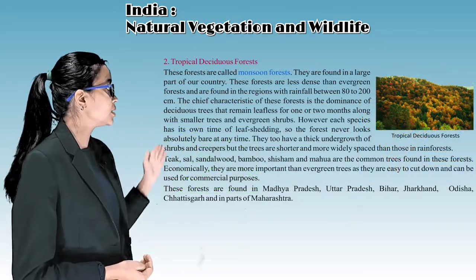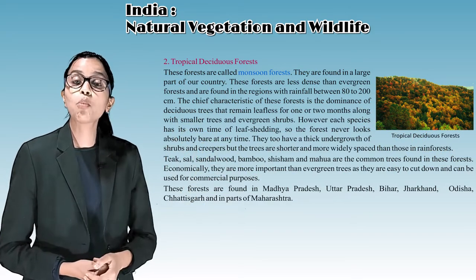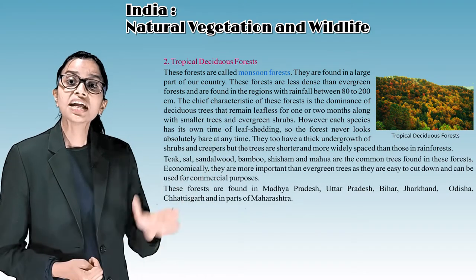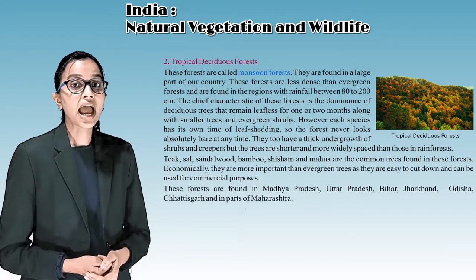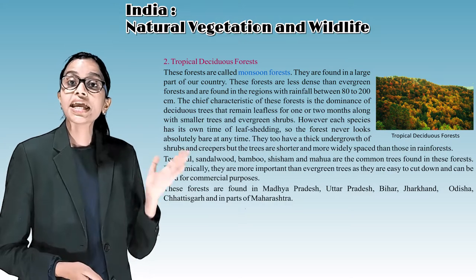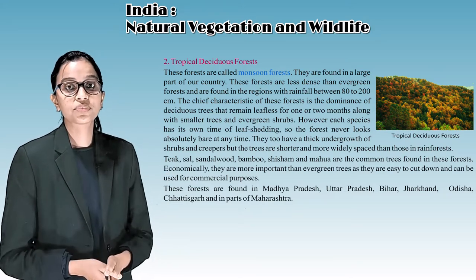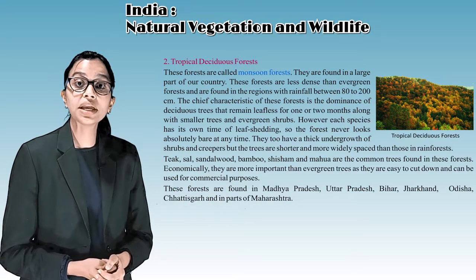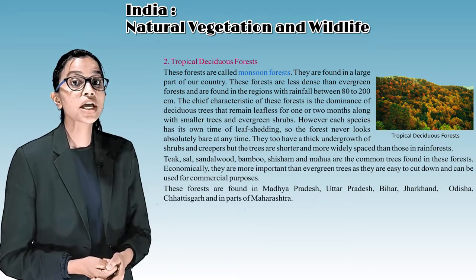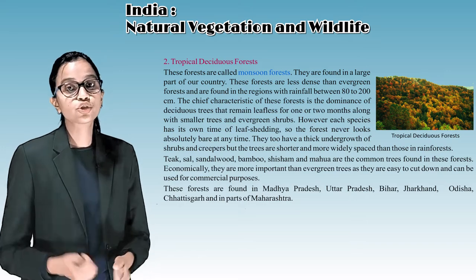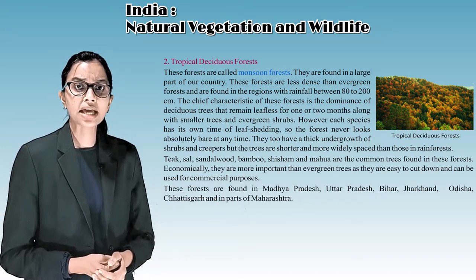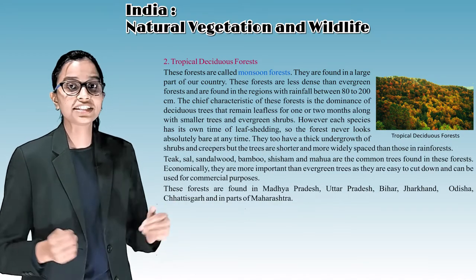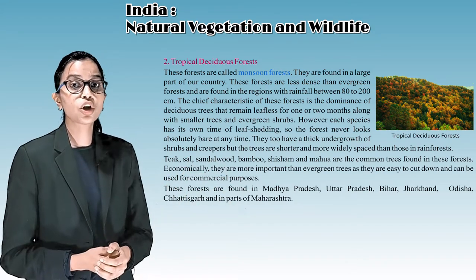The second is tropical deciduous forests, also called monsoon forests. They are found in a large part of our country, less dense than evergreen forests, and are found in regions with rainfall between 80 to 200 centimeters. The chief characteristic is the dominance of trees that remain leafless for one or two months. However, each species has its own time of leaf shedding, so the forest never looks absolutely bare at any time.